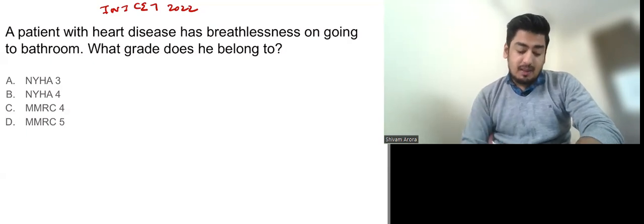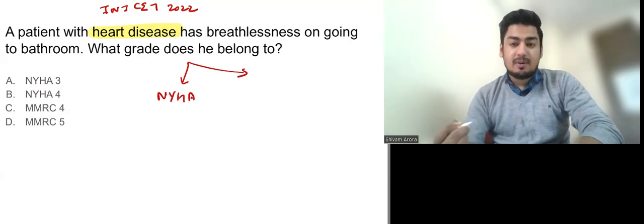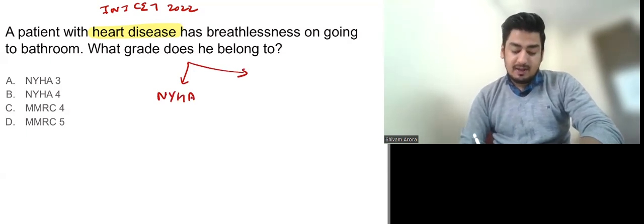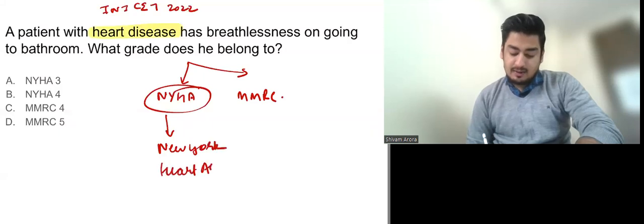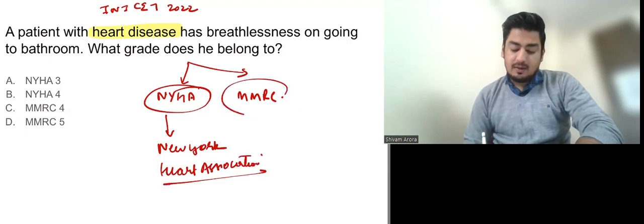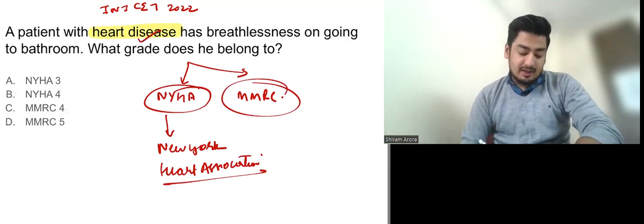So first of all, the patient has heart disease. So the classification of breathlessness for heart diseases is NYHA scoring. While for pulmonary diseases like COPD is MMRC. So NYHA's full form is New York Heart Association. You will tell me in the comment section what is the full form of MMRC. Now the patient is having heart disease, so NYHA answer will be correct and MMRC are out.